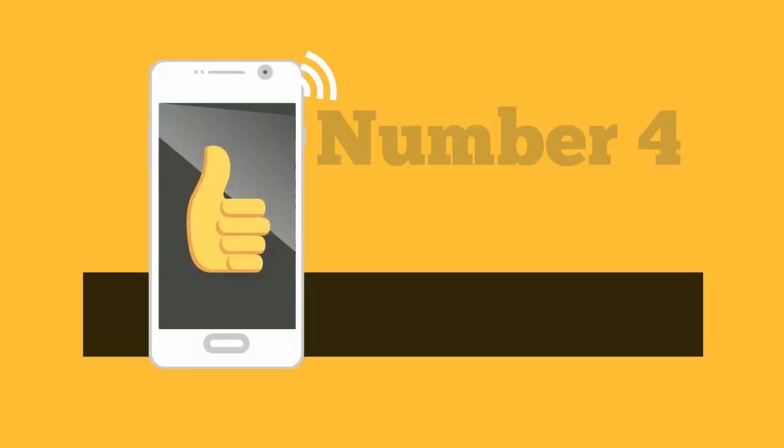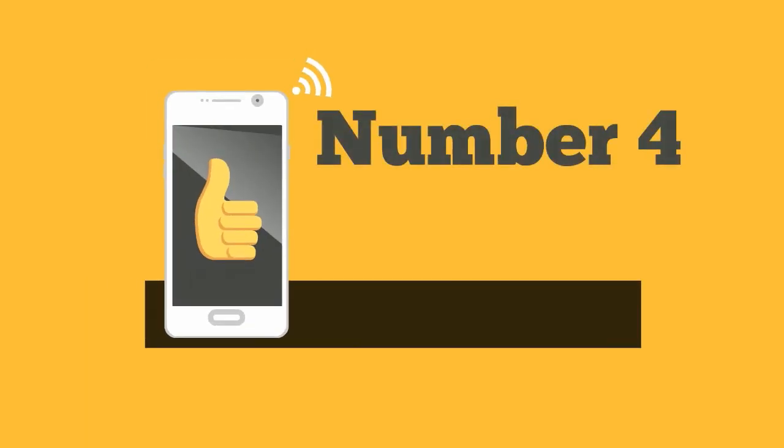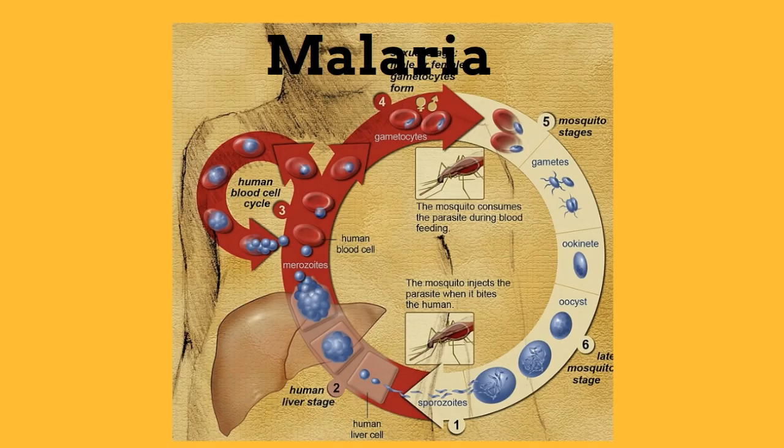Number 4: Sometimes the parasite completes its life cycle inside the host. For instance, malaria parasites use two hosts to complete their life cycles — humans and mosquitoes. This does not happen in a predator-prey relationship.